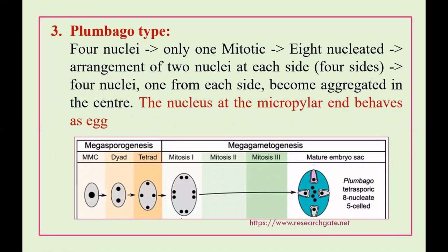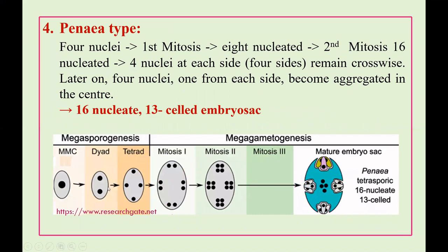The third type is plumbago-type. Here, the tetrad coenomegaspore formed in megasporogenesis has its 4 nuclei moving to each of the 4 sides — 1 to the micropylar side, 1 to the chalazal side, and 2 on either side. This undergoes 2 mitotic divisions resulting in 16 nuclei. The third mitotic division is totally absent.